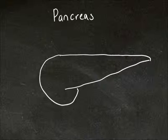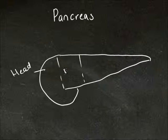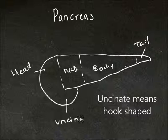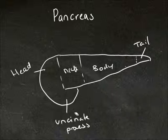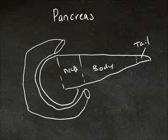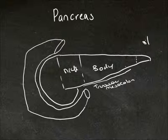Let's take a look at the structure of the pancreas now. Here we have the head of the pancreas, then we have the neck, then the body, and then the tail. Down here we have what is called the uncinate process. The head and uncinate process are within the curvature of the duodenum. This edge of the body is attached to the transverse mesocolon. The tail, as mentioned before, lies within the splenorenal ligament.